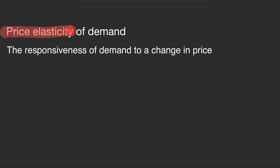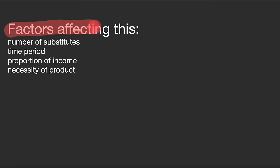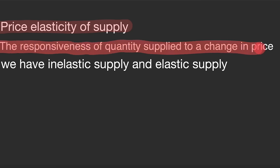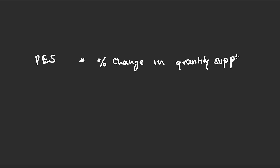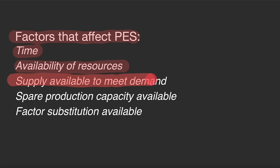Price elasticity of demand (PED) is the responsiveness of demand to a change in price. We have inelastic demand and elastic demand. Factors that affect PED include the number of substitutes, time period, proportion of income, and necessity of the product. Price elasticity of supply (PES) is the responsiveness of quantity supplied to a change in price. The formula is: percentage change in quantity supplied divided by percentage change in price. Factors affecting PES include time, availability of resources, spare production capacity, and factor substitution available.